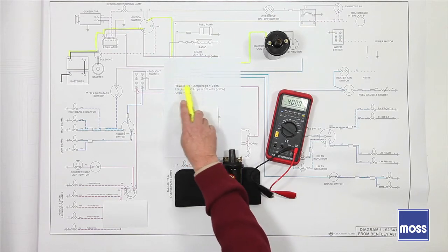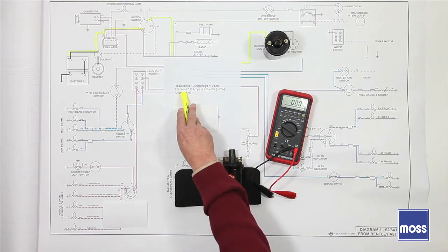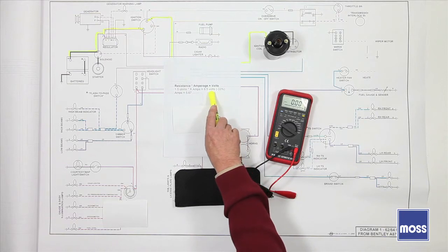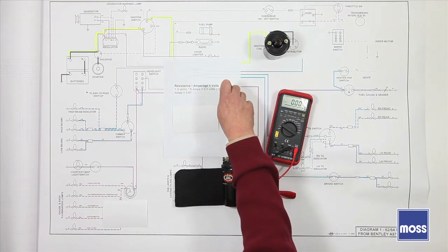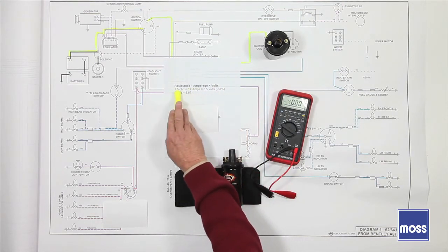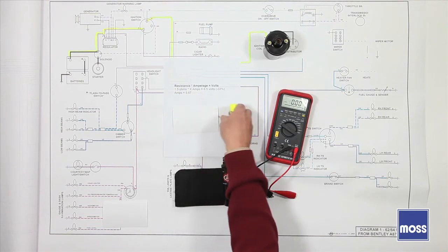Okay, remember that resistance times amperage equals volts. Resistance: it's a 1.5 ohm coil. Amps we don't know yet because I haven't figured it. And instead of 12 volts, I'm going to give it eight and a half volts. I'm going to assume that this battery is down by about one third. Okay, she's cranking and it's cold, so she's down. Now I do the math: 1.5 times something has to equal 8.5, and the answer is 5.67 amps.